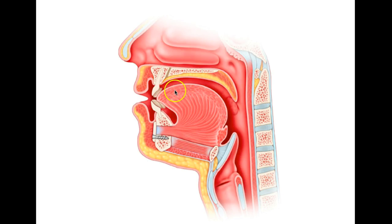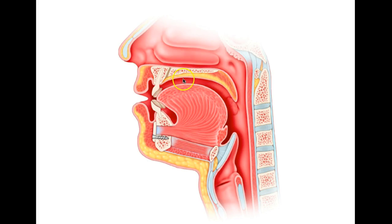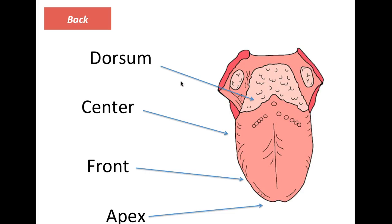Now let's look at the front of the tongue. With the front of the tongue we produce sounds like the 'y' sound. What happens is that the front of the tongue touches the hard palate and we produce such sounds. The air coming out of the trachea goes up through the epiglottis and meets what we call a constriction, producing the sound.